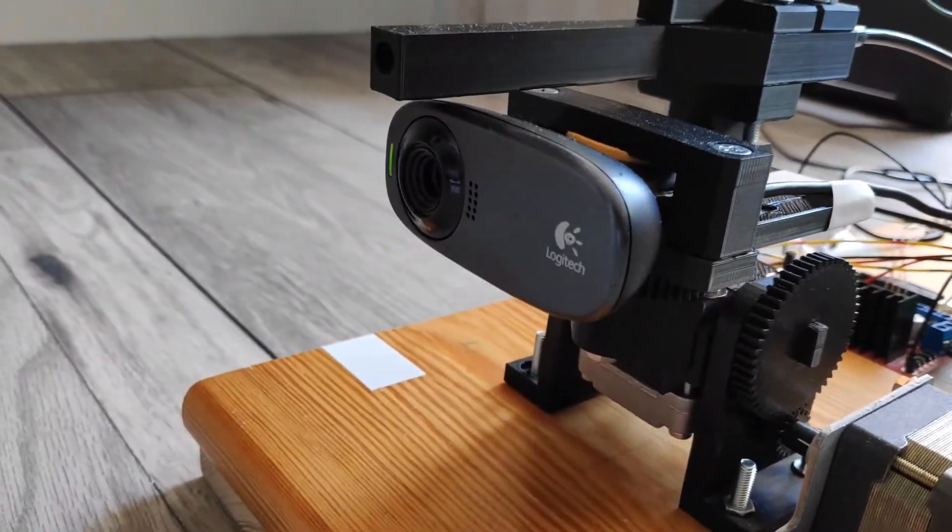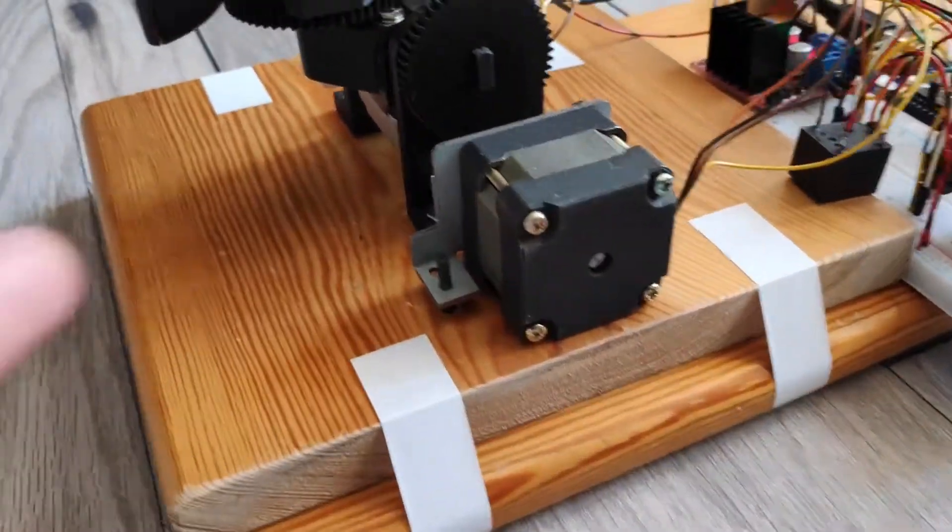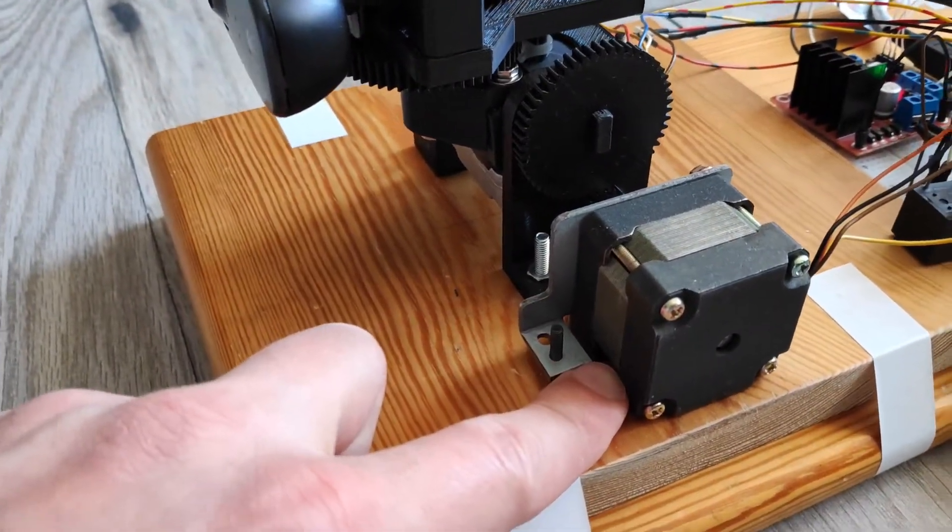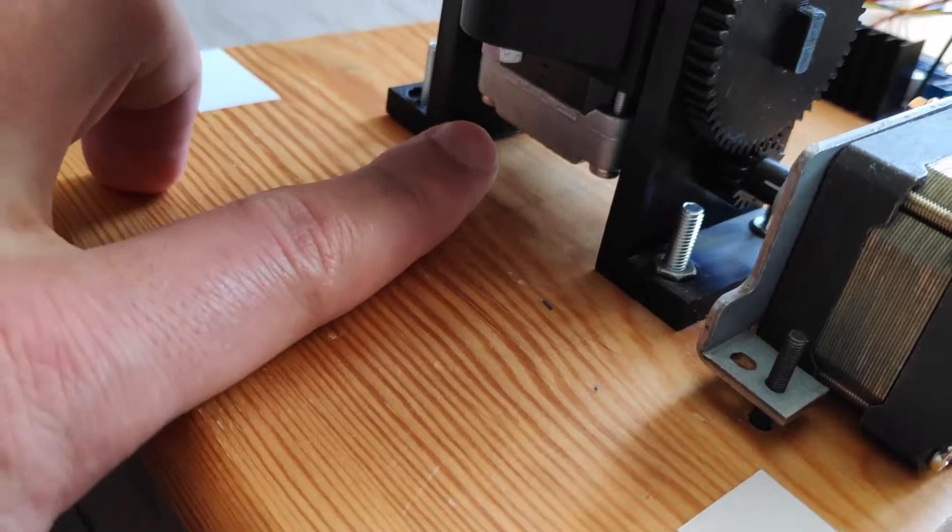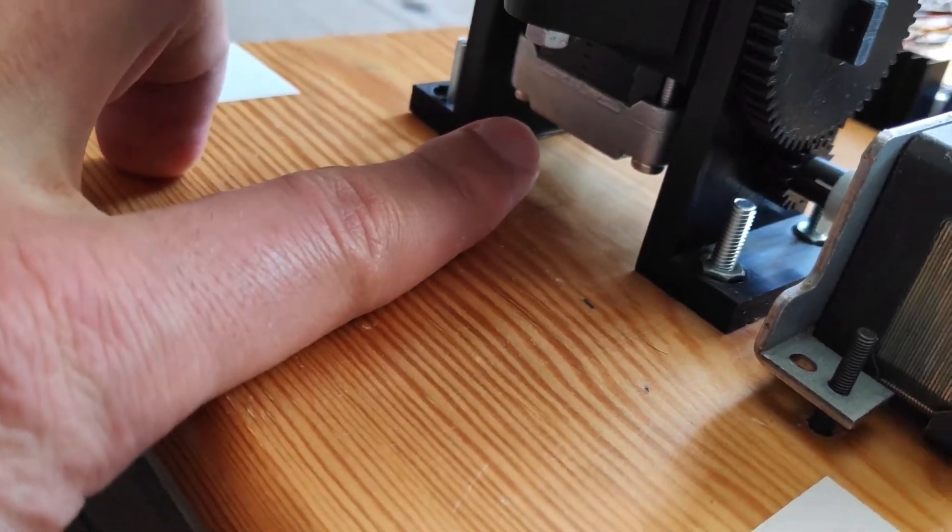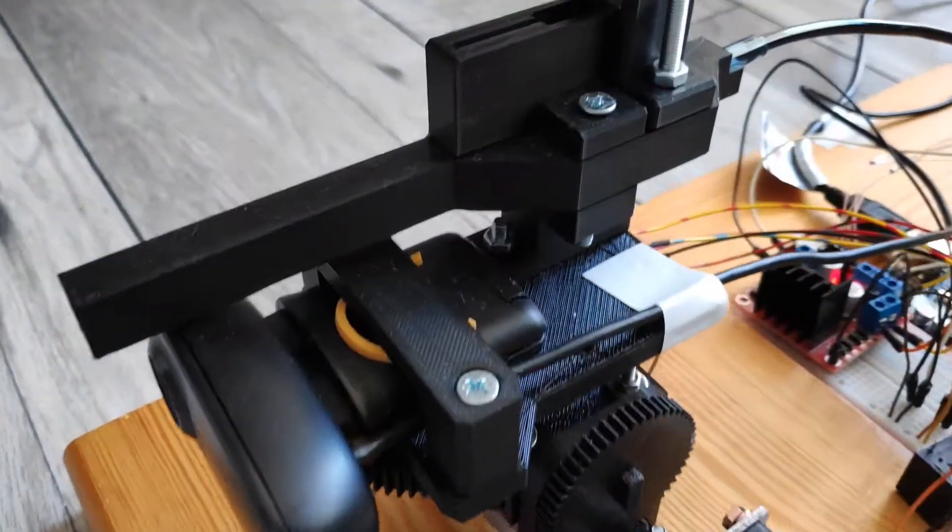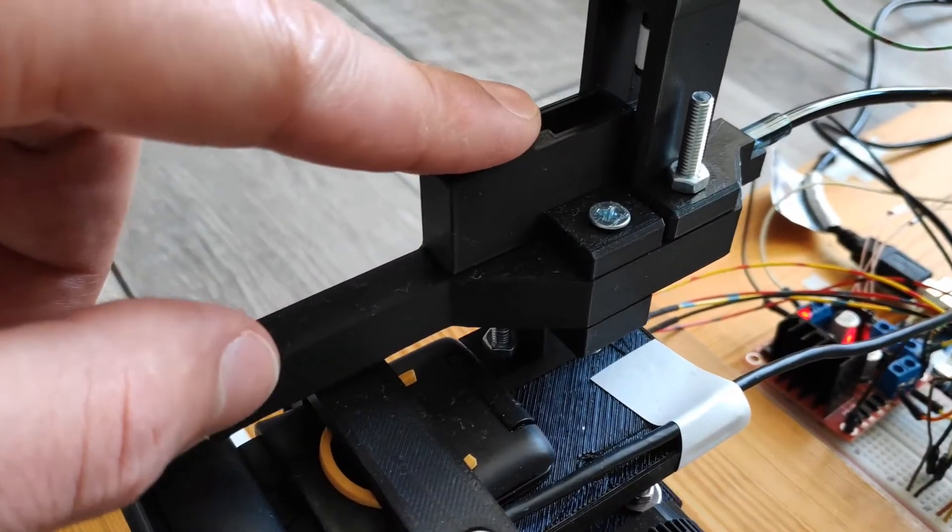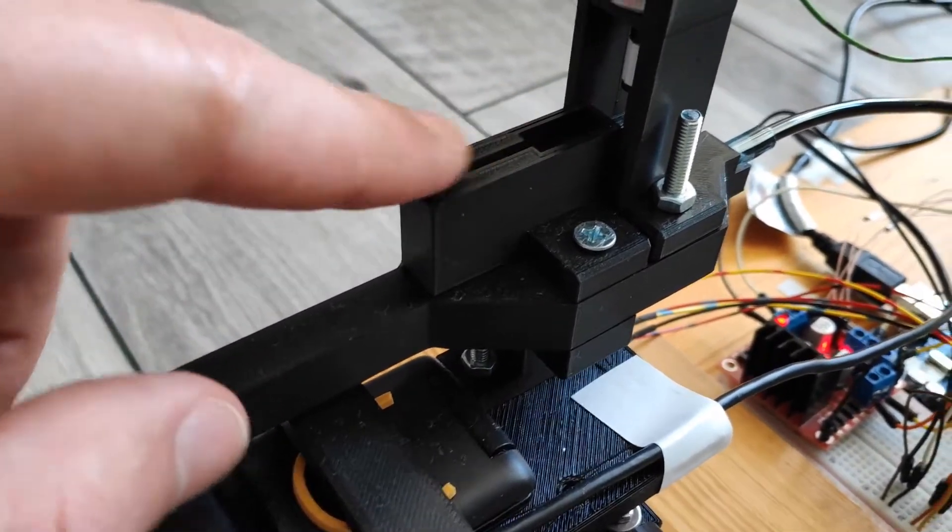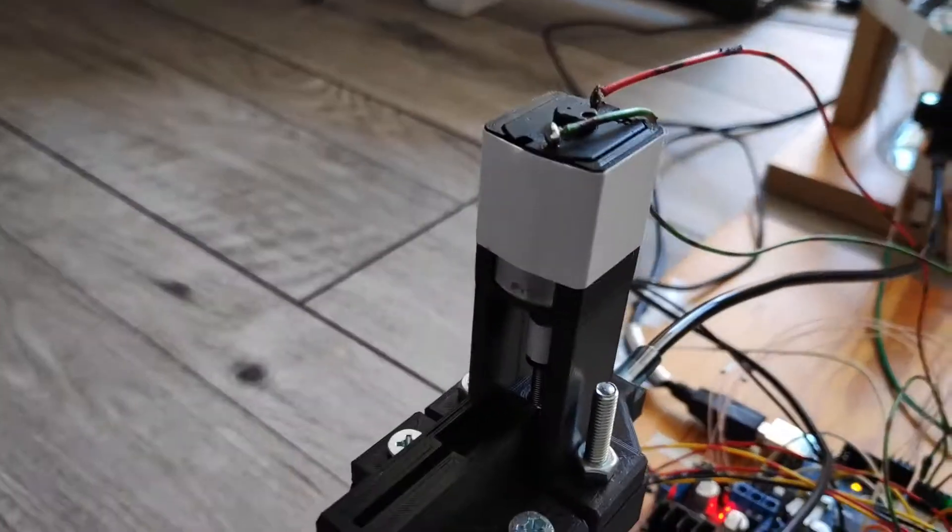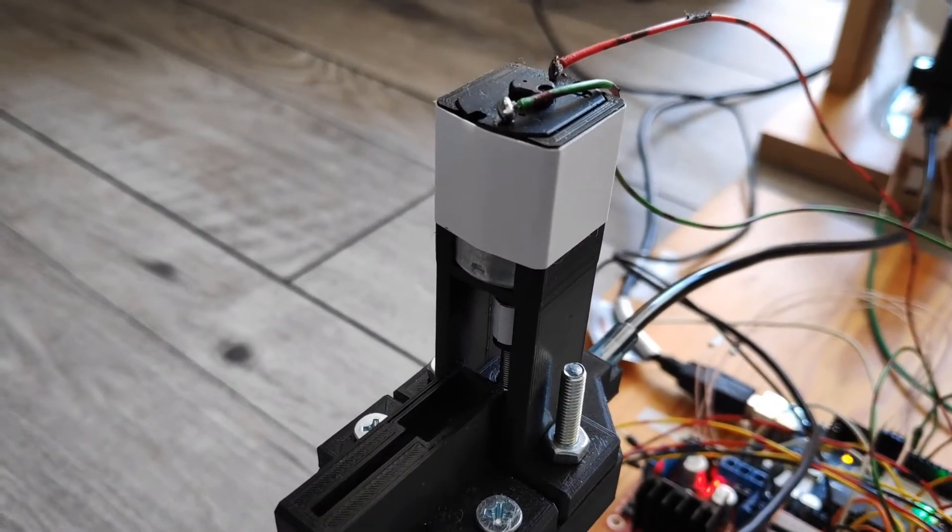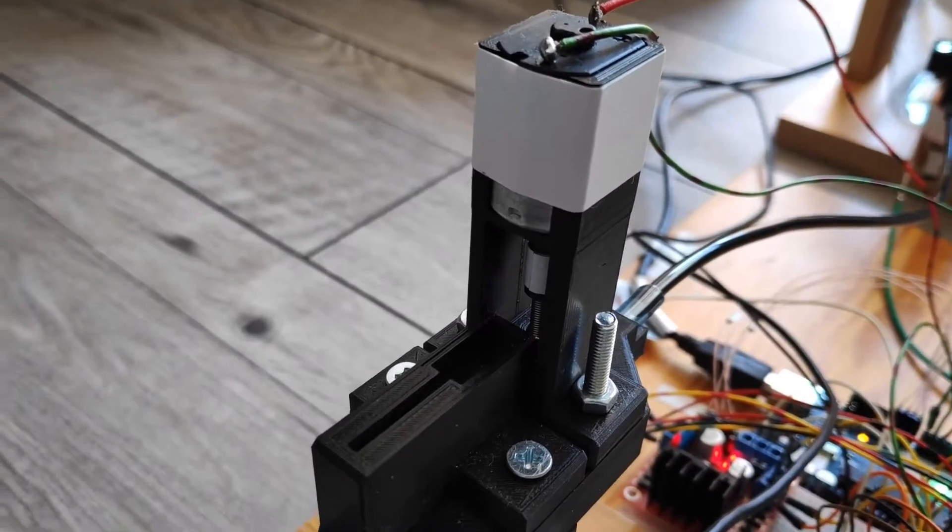So here you can see the camera. This is the stepper motor that moves the BB gun up and down and here you can see the stepper motor that moves it left and right. This is the opening where you have to place your BBs and this is a DC motor that is used to reload the BBs after shooting.